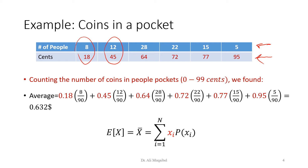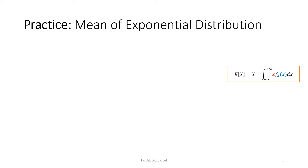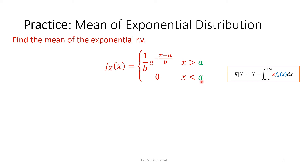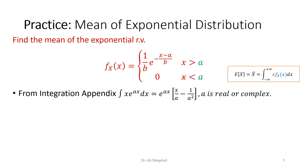Now let's move to a continuous example. This practice problem says: find the mean of the exponential distribution — that is, find the mean for an exponential random variable. The exponential is a continuous scenario and its PDF is given. Our job is to find the expected value. To do this we must scale by x and integrate. Since exponential scaled by x requires special integration, we look up the formula from an integration appendix.